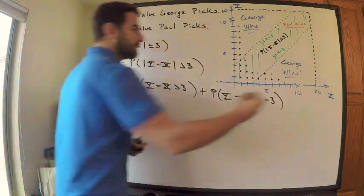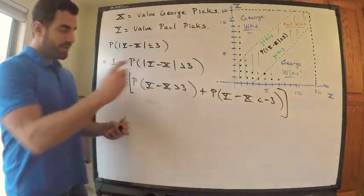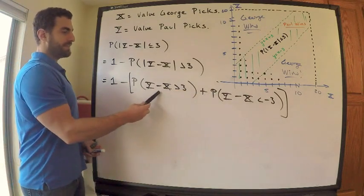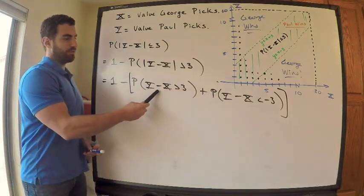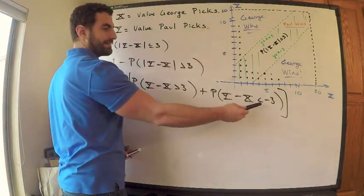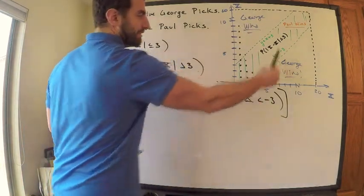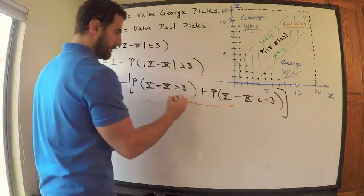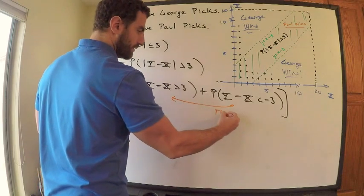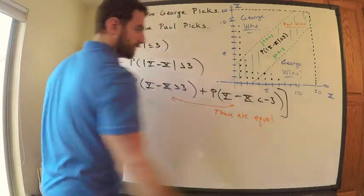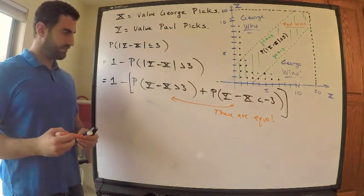Remember what absolute value greater than the number means: either the thing inside is greater than the number, or the thing inside is less than negative of the number. Okay. Now again, I mean we want to do things as simple as possible. So if you look at the picture, you'll see that these two regions are exactly the same. This is saying Y is greater than 3 plus X. That's this region up here. This is saying Y is less than negative 3 plus X. That's this region down here. These are equal.